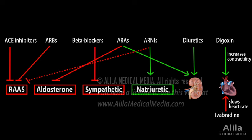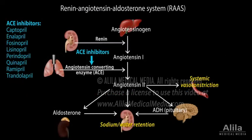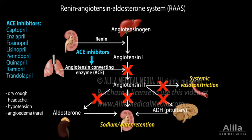First-line therapy for patients with reduced ejection fraction typically includes an angiotensin-converting enzyme (ACE) inhibitor and a beta-blocker. ACE inhibitors block the conversion of angiotensin-1 to angiotensin-2 in RAS, thereby inhibiting RAS activity. Common side effects include dry cough, headache, and hypotension. Rarely, ACE inhibitors may cause a swelling reaction known as angioedema.